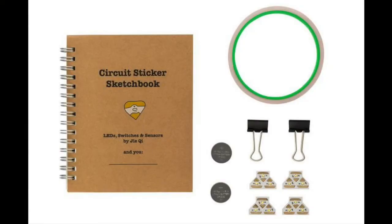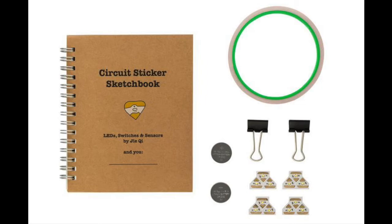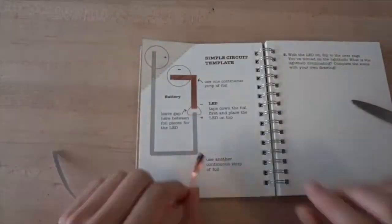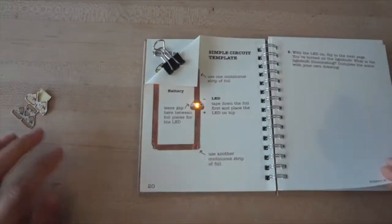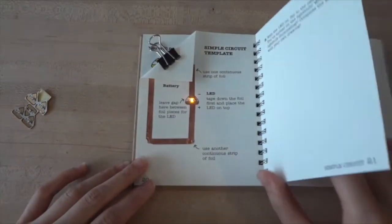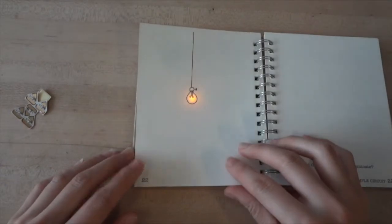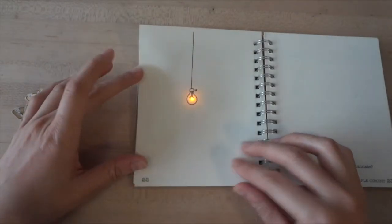As an educator, I believe that it's important not only to provide the tools, but also provide support resources and inspiration. That's why I wrote the Circuit Sticker Sketchbook. This book has activities that show you both how to build the circuitry, as well as how they work. Let's take a look inside. Each activity starts with showing you how to build a circuit using the template, so it's a little bit like a coloring book for electronics. And then the next page is a drawing that allows you to complete the scene. So what does your circuit do? You can draw whatever you want.